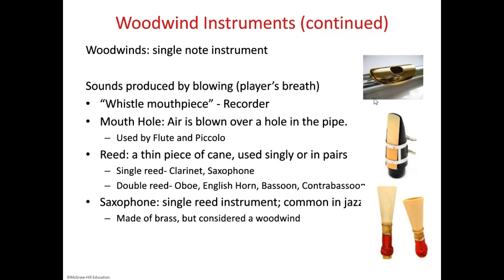Single reed instruments — those that use just a single reed — are the clarinet and the saxophone. Double reed instruments, which have two pieces of cane wrapped together that you blow on so they vibrate together, are the oboe, English horn, bassoon, and contrabassoon. As you might expect, it's a very nasal sound. If you've ever used a turkey call or duck call, those typically use a reed of some kind. Bagpipes actually use a double reed inside the tube you blow into.